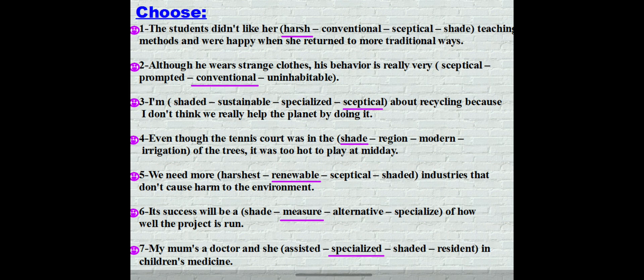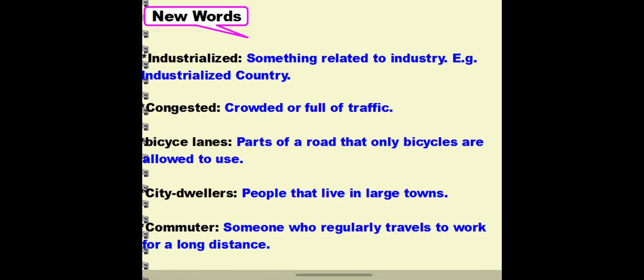Number six: Its success will be a measure of how well the project is run. Number seven: My mom's a doctor and she specialized in children's medicine. Now let's deal with the new words. Industrialized: something related to industry. Congested: crowded or full of traffic.